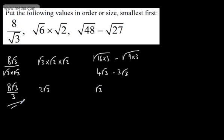So all we need to do now is consider which is the largest and which is the smallest. This is going to be the smallest. Root 3 is the smallest. So that's 1.